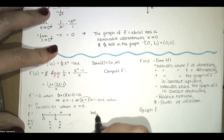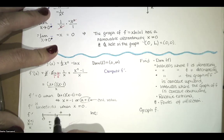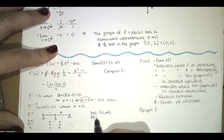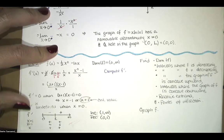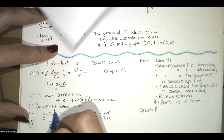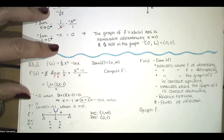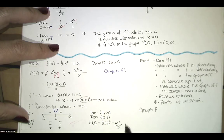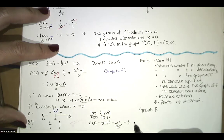That tells us when the function is increasing and decreasing. The function is increasing on the interval from 1 to infinity, and decreasing on the interval from 0 to 1. The function has a zero derivative at x equals 1, going from decreasing to zero slope to increasing, so we have a relative minimum at x equals 1 by the first derivative test. f of 1 equals one half of 1 squared minus natural log of 1. Natural log of 1 is 0, so f of 1 equals one half, which is a relative minimum.